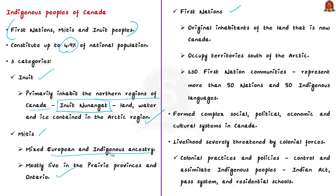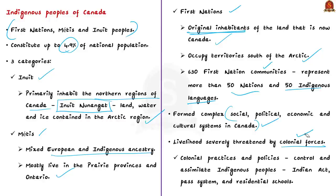The First Nations were the original inhabitants of the land and now occupy territories south of the Arctic in Canada. There are more than 630 First Nation communities representing more than 50 nations and 50 indigenous languages. These indigenous people formed complex social, political, economic and cultural systems before the arrival of Europeans to North America. But the indigenous people's livelihood was severely threatened by colonial forces. Due to colonization and white settlement, traditional indigenous ways of life were altered. Colonial practices including the Indian Act, the power system, and the residential schools system were used to control and assimilate indigenous people.